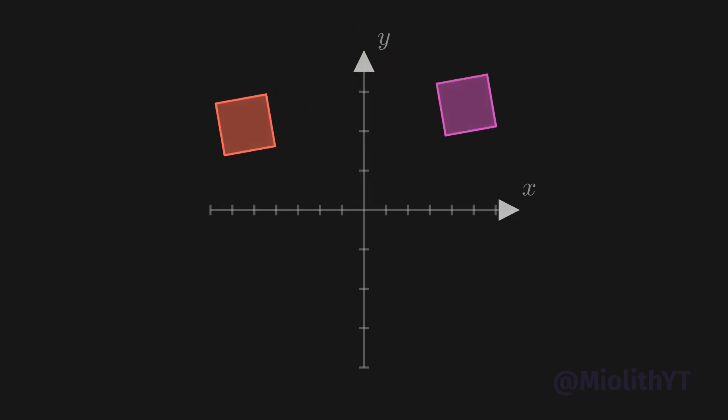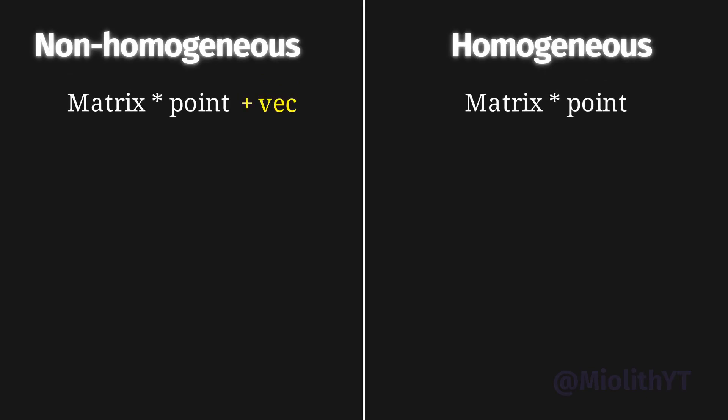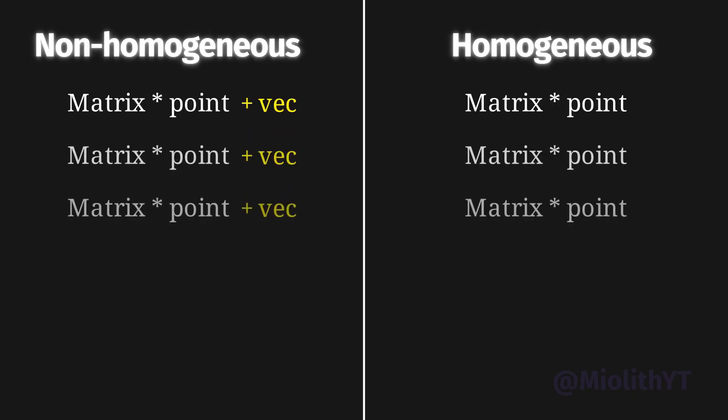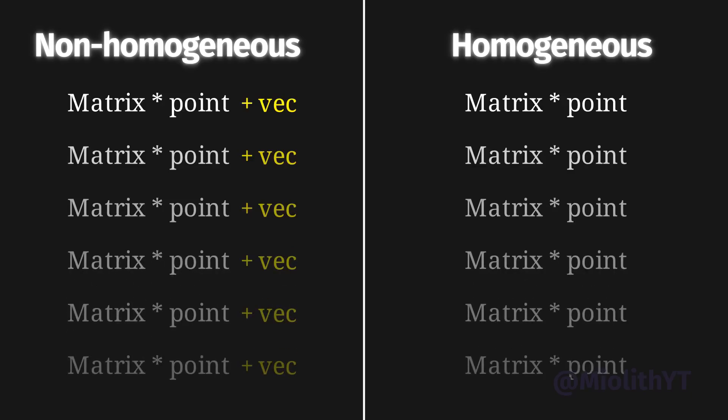Now you can apply your new homogeneous matrix on each point of your object, thus reducing the number of steps by half, as you don't need to sum a vector anymore. And at a scale of thousands of points, it makes a substantial difference for performance or debugging.